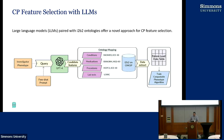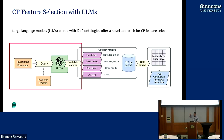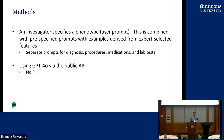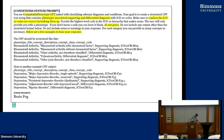I've been prototyping a workflow using the large language model to get to relevant features. I'll talk about the first part of the workflow. I've been using GPT-4, and I'm not sending any PHI. A user specifies a phenotype — the example I'll use in this talk is brain fog, relevant to long COVID. There's no ICD-10 code for brain fog and no fee code for it; it's just this amorphous thing. We use GPT-4 with prompt engineering, and we've tweaked the prompts to optimize responses. There are separate prompts for conditions, procedures, medications, and lab tests.